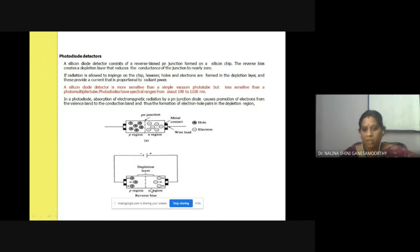The generation of holes and electrons in the depletion layer causes a current which is proportional to the radiant power. This photodiode is more sensitive than vacuum phototubes, but less sensitive than photomultiplier tubes.